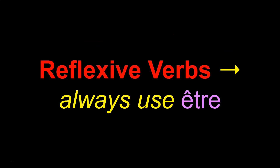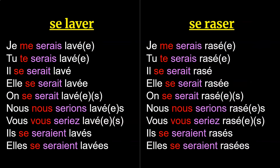The rules of past participle agreement in French are more complex, but I'll cover that in a future video. Reflexive verbs — verbs with se in front of them — always use être as their helping verb with no exceptions. These include se laver (to wash oneself) and se raser (to shave oneself). Like Dr. and Mrs. Vander Tramp verbs, reflexive verbs also generally agree in gender and number with the subject, and you need to add the right reflexive pronoun between the subject and verb.